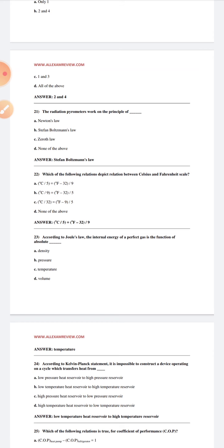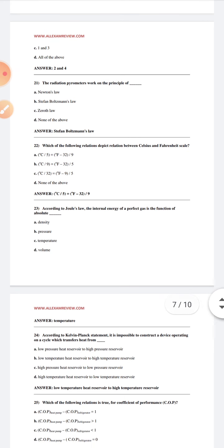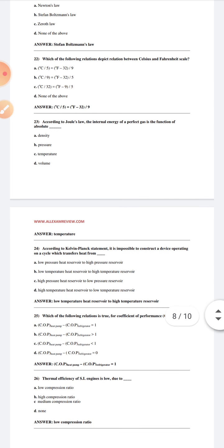The internal energy of perfect gas is a function of absolute temperature according to Joule's law. According to Kelvin-Planck statement, it is impossible to construct a device operating on a cycle which transfers heat from low temperature heat reservoir to high temperature reservoir.